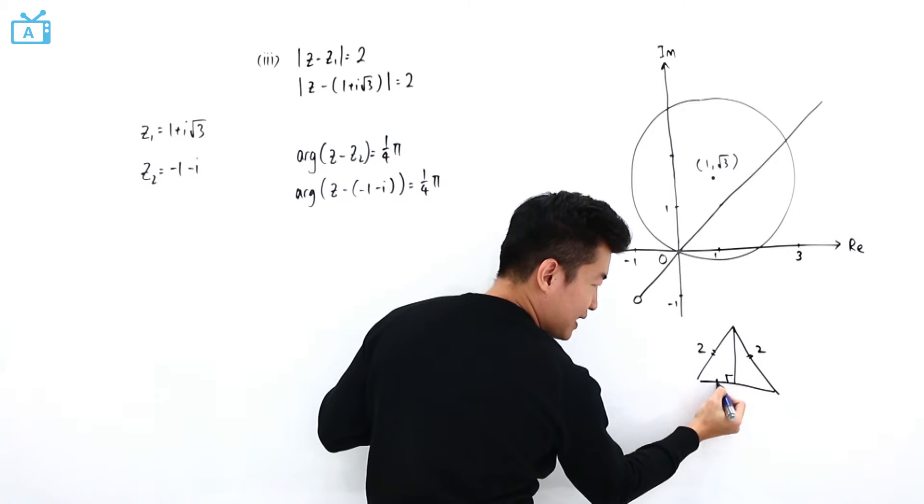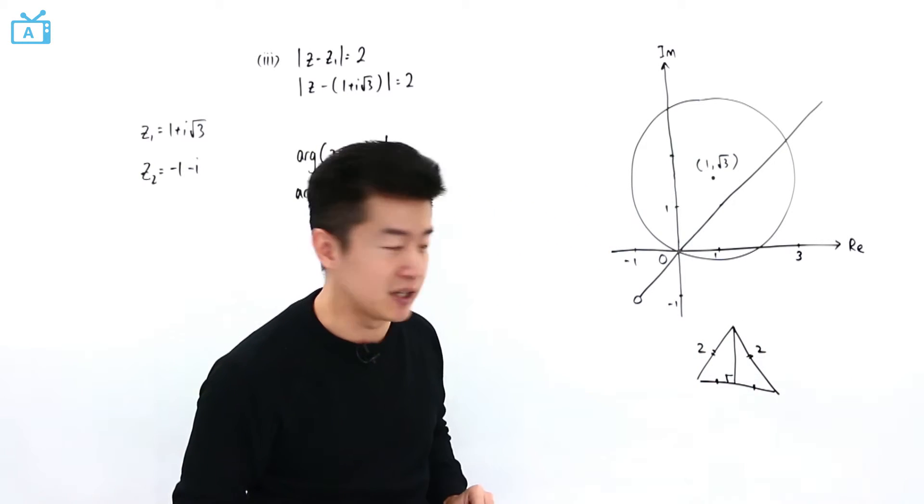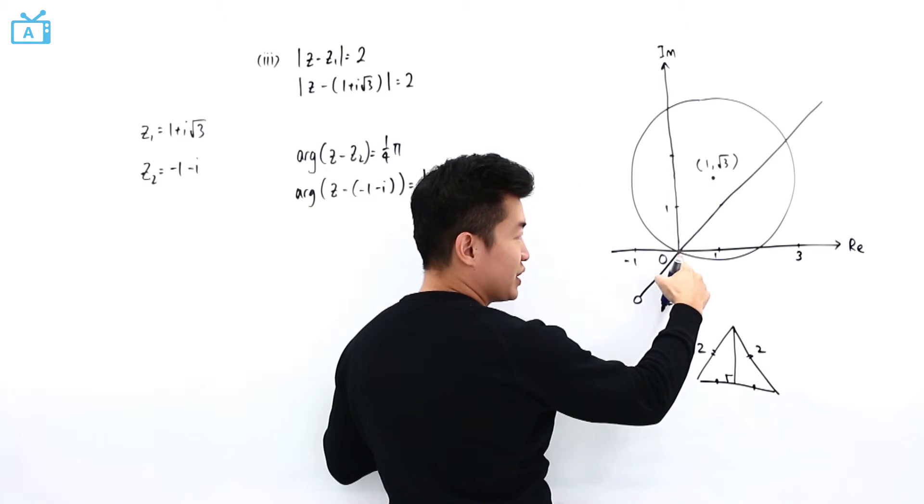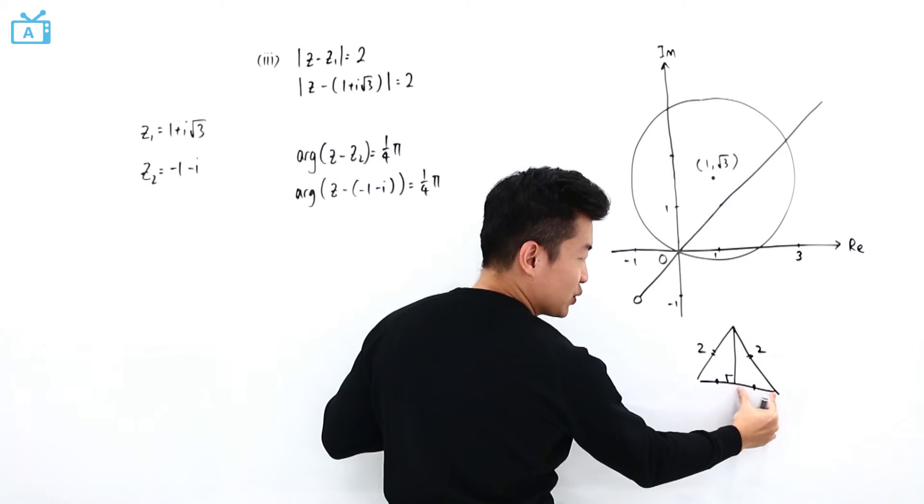which makes this length the same as this length because I'm applying the property of an isosceles triangle. This is at the origin, this is at 1, so this distance is 1 and this distance is also 1.